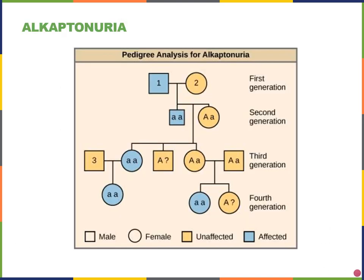Let's look at the pedigree for a genetic disorder known as alcaptanuria. This is a disorder where two of our amino acids, phenylalanine and tyrosine, cannot be properly metabolized. Individuals with alcaptanuria might have darker skin, brown urine, and joint pain or joint damage, in addition to several other symptoms.